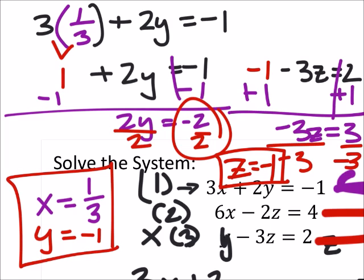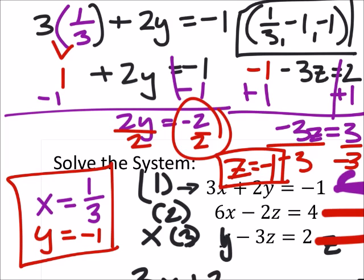So there are our three answers. As an ordered triple, this would be one-third, negative one, and negative one. And this would be how we would write the actual answer there.